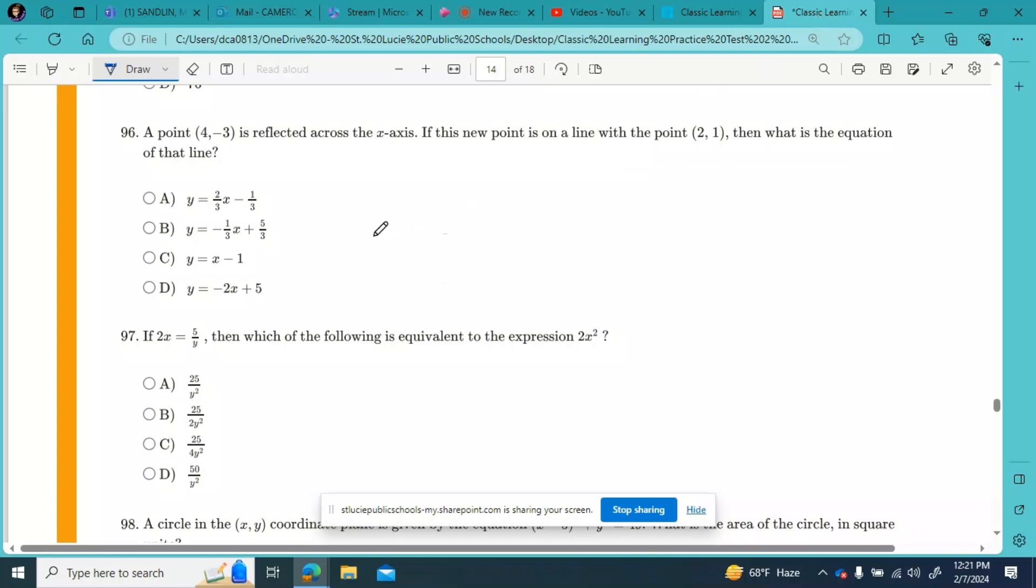All right, guys, we are moving along on CLT math practice number two, question number 96. It says a point (4, -3) is reflected across the x-axis. If this new point is on a line with the point (2, 1), then what is the equation of that line?